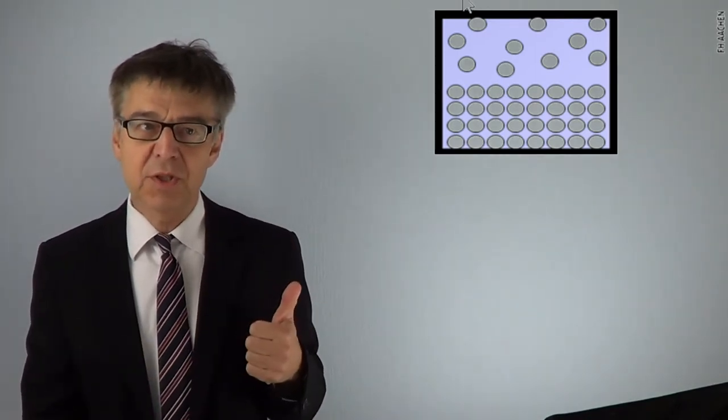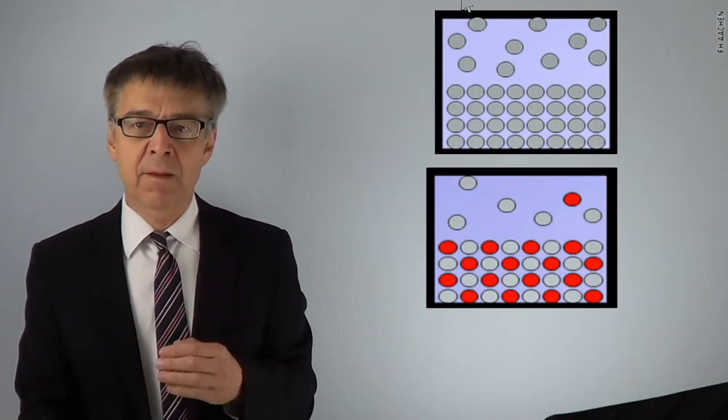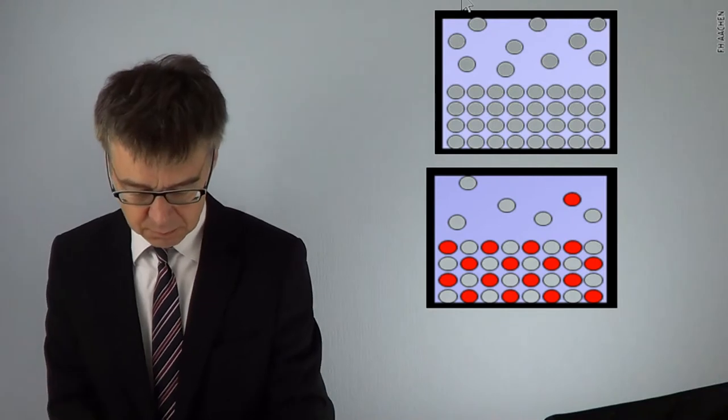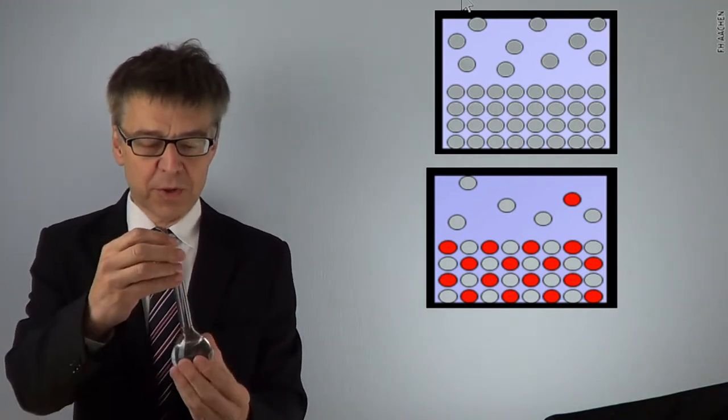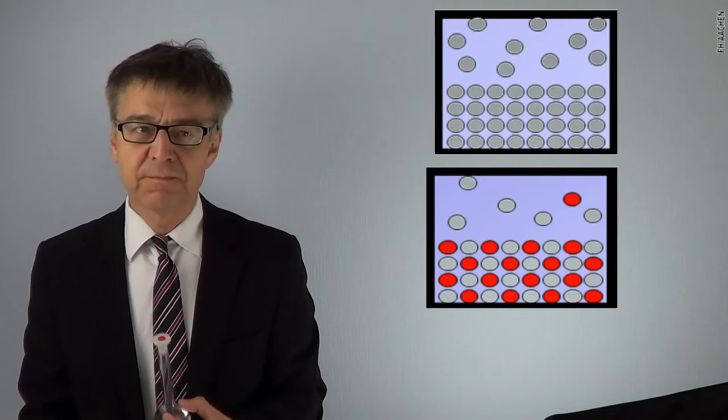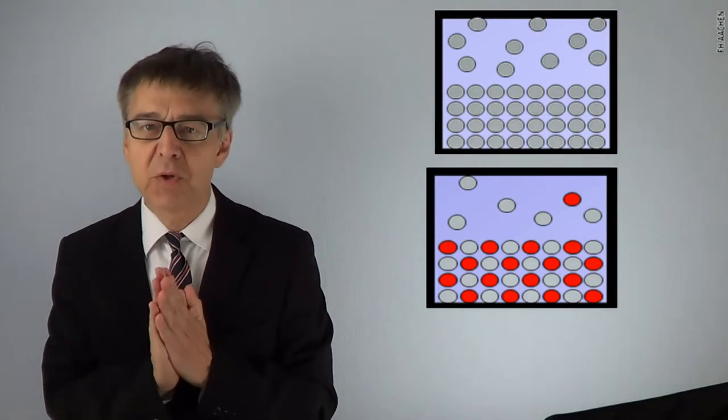Don't mix the number of phases with the number of components. The number of components indicates how many types of particles are present in our system. Also, we have two phases in this example. There's only one component, namely the white particles. In this example, we have two phases and two components. In this vessel, we have only water, the H2O molecules. This is also a one-component system. Air is a mixture of nitrogen and oxygen. That is, we have at least a two-component system.